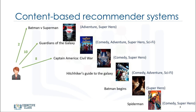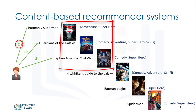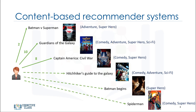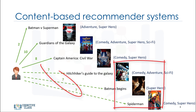Let's say the user has watched and rated three movies so far, and she has given a rating of 2 out of 10 to the first movie, 10 out of 10 to the second movie, and 8 out of 10 to the third. The task of the recommender engine is to recommend one of the three candidate movies to this user. In other words, we want to predict what the user's possible rating would be of the three candidate movies if she were to watch them.